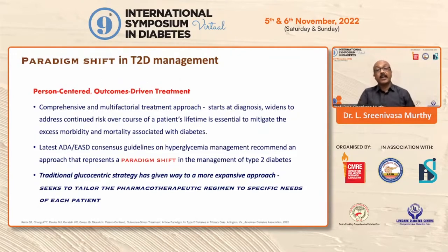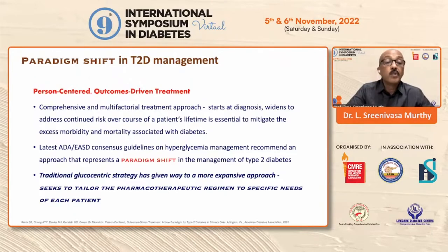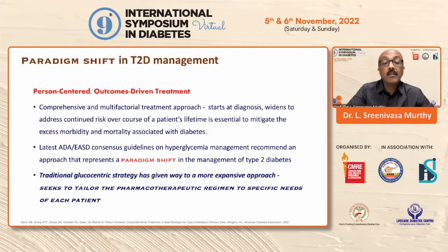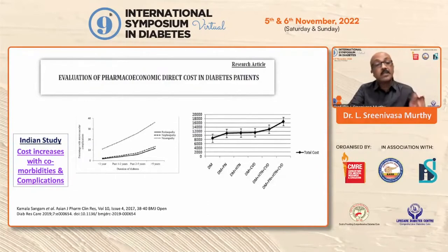This comprehensive and multifactorial treatment approach, which has to start at the beginning of diagnosis, widens to address the continued cardiovascular risk continuum. The latest guidelines — whether ADA, EASD, or ESC — all recommend an approach that represents a paradigm shift in the management of diabetes. This traditional glucocentric strategy has given way to a more expansive approach which seeks to tailor and individualize pharmacotherapeutic regimens.